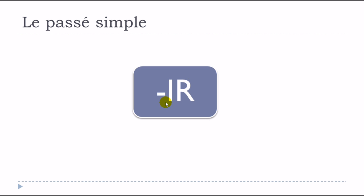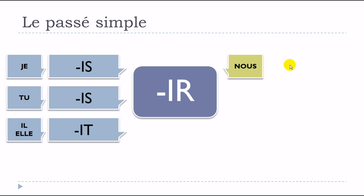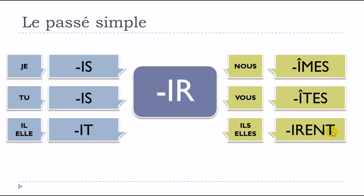For the second group — regular verbs in IR — the endings will be: je IS, tu IS, il/elle IT, nous Î-M-E-S, vous Î-T-E-S, ils/elles I-R-E-N-T. Don't forget the circumflex on the nous and vous forms.